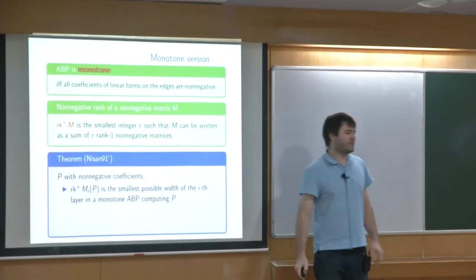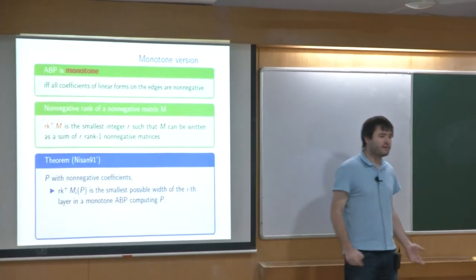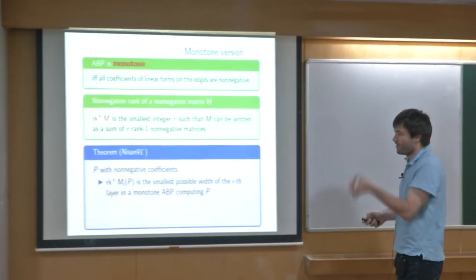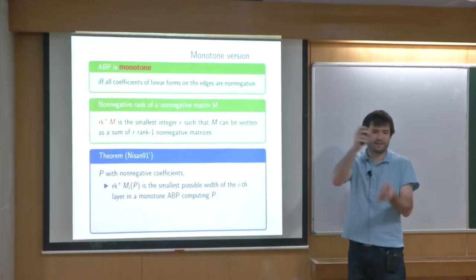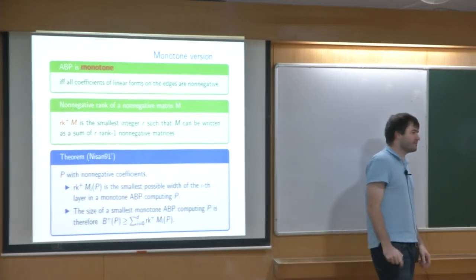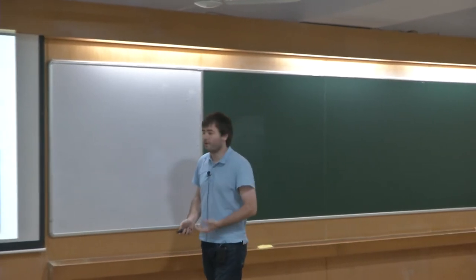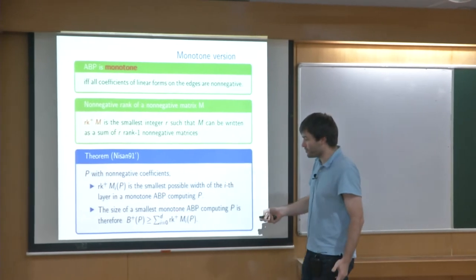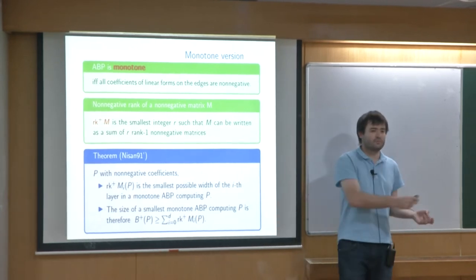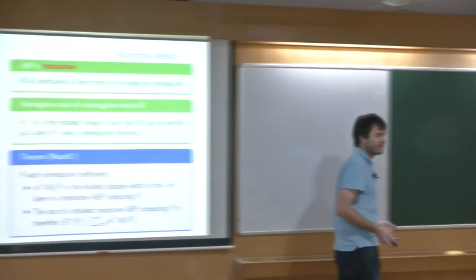Nisan proved in the same paper that the characterization for one layer still works completely for the non-negative rank: the non-negative rank at one layer exactly corresponds to the minimal width at that layer for monotone ABPs. However, it was not proven that we can achieve the minimum simultaneously for all layers. We know the minimal size of a monotone ABP is at least the sum of the non-negative ranks, but whether equality holds is left open.